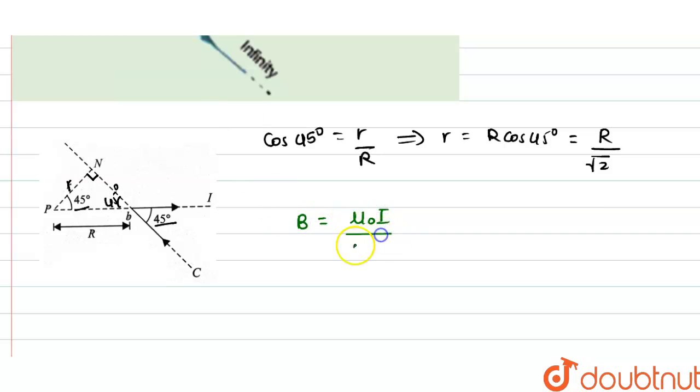divided by 4 pi r into sine of theta 1 plus sine of theta 2. Now this theta 1 and theta 2 are the angles